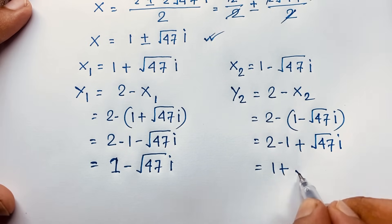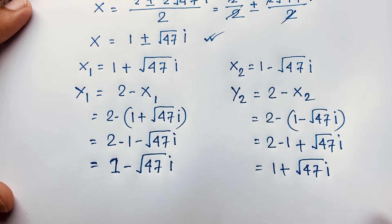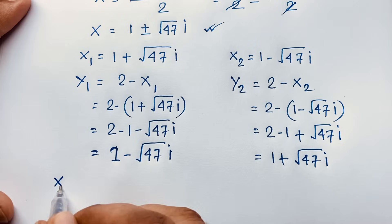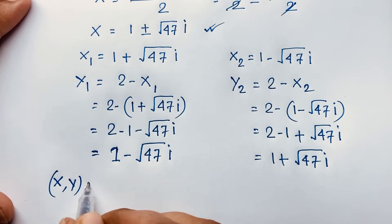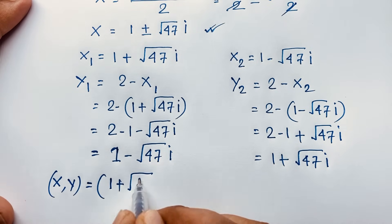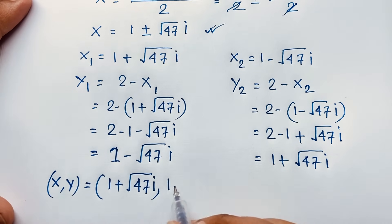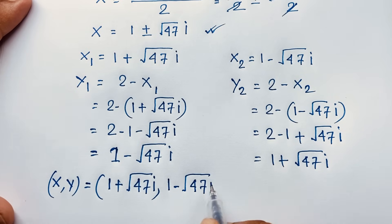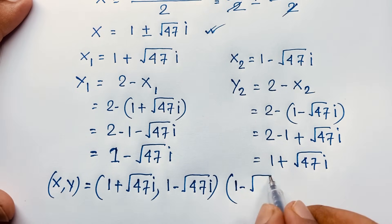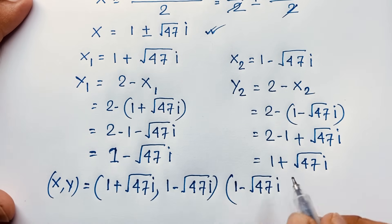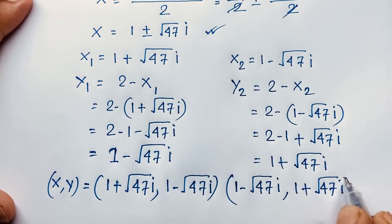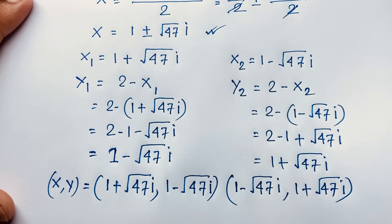So we find two complex solutions. When x equals 1 plus √47·i, then y equals 1 minus √47·i. And for the other solution, x equals 1 minus √47·i and y equals 1 plus √47·i. This is our final solution to this math olympiad question — both are complex numbers.